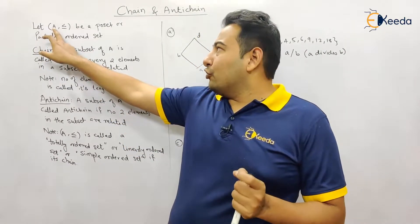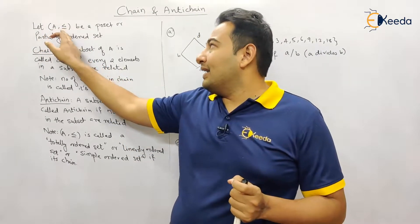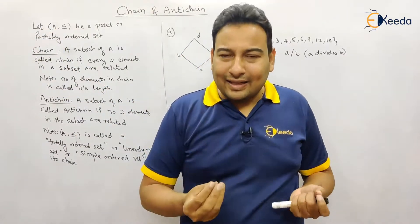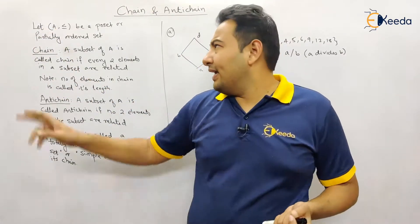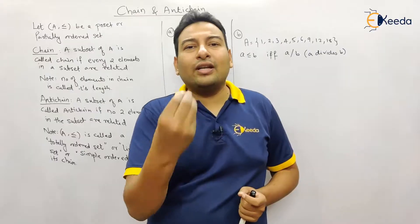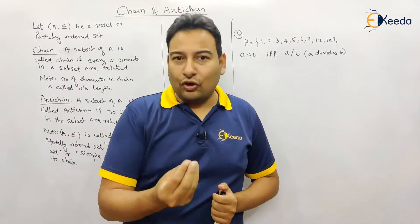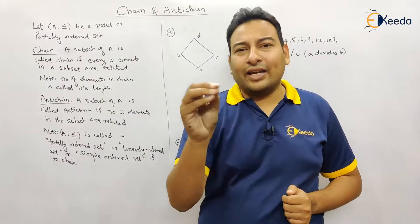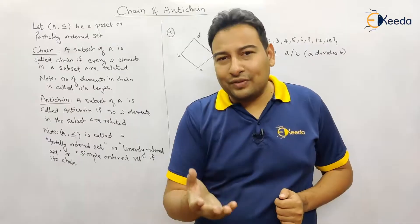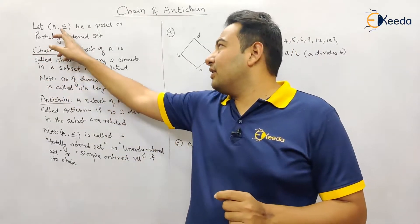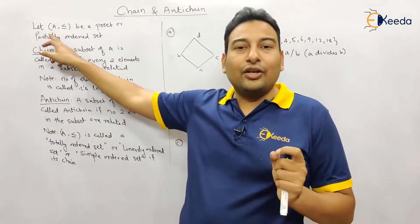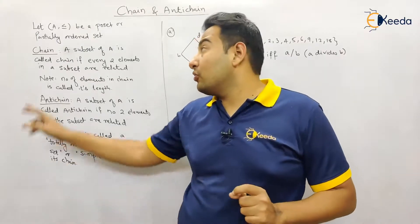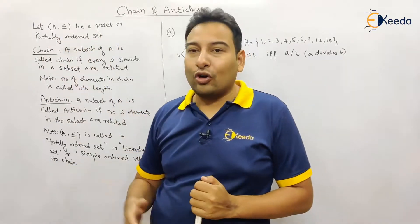We are assuming a poset (A, ≤). Here A can be any set, and ≤ is a general representation of a poset relation — it can be any other symbol like divisibility or equality. This is the way a poset, also called a partially ordered set, is represented.